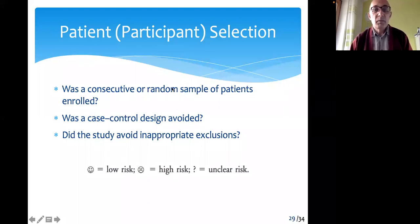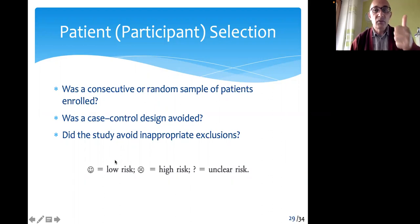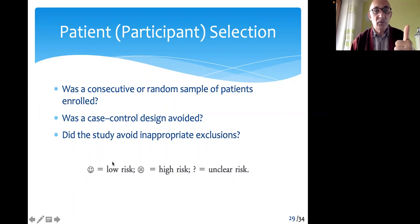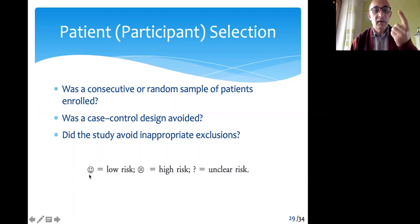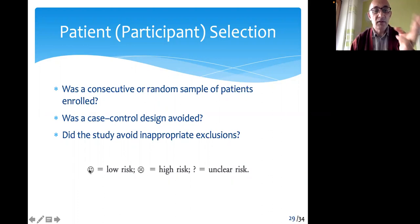Let me briefly go through these different domains. You should be able to tell how QUADAS works. It uses a scale of three point levels: low risk, unclear risk, or high risk — so three options.